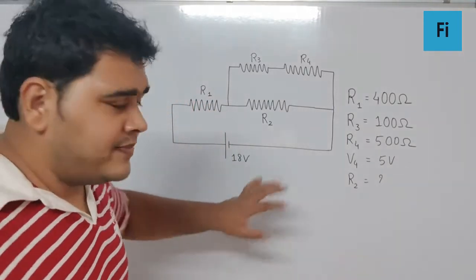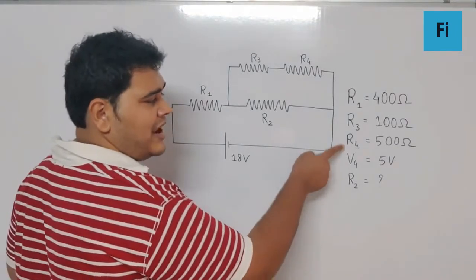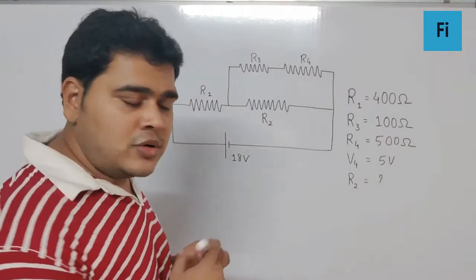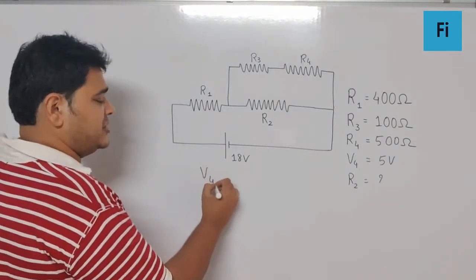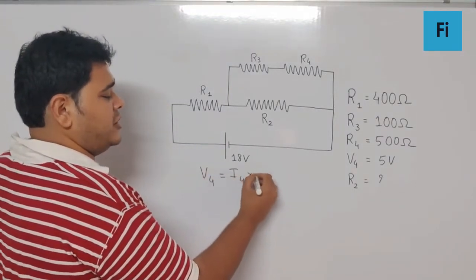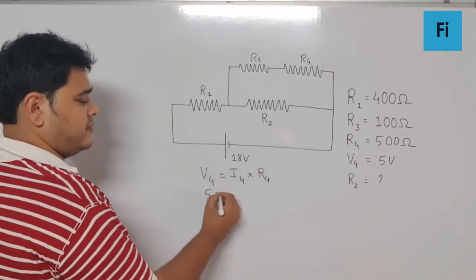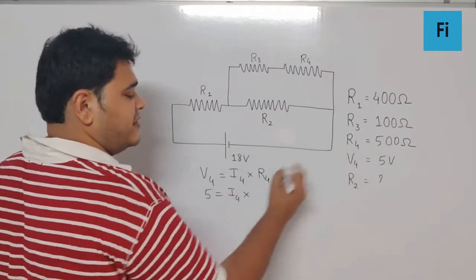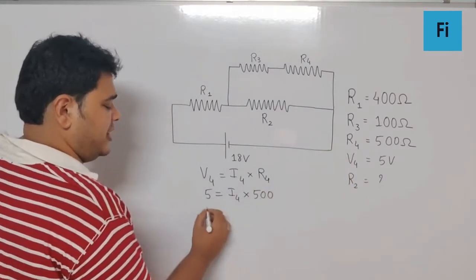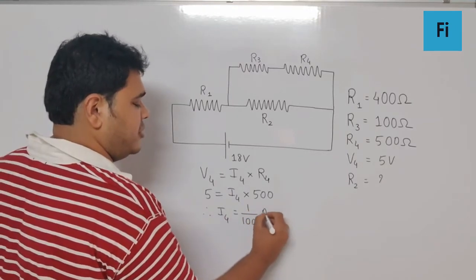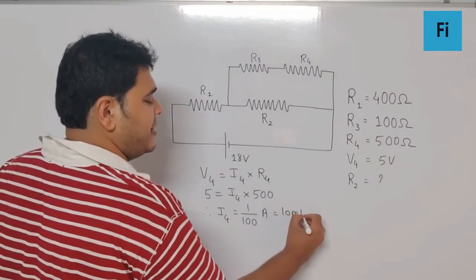Now, can I say, since we know the value of V4 and R4, we can actually find the current through resistance 4. That will be V4 equals I4 into R4. So V4 is 5, R4 is 500. So we can say I4 is 1 by 100 ampere or 10 milliampere.